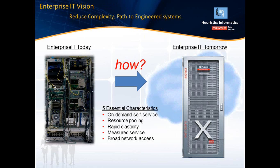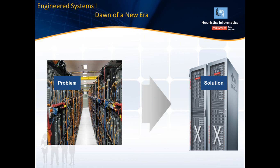How can we reduce complexity? If my application is on different components, managing each component within the data center leads to higher data center cost — the horizontal space in the data center grows and IT costs increase. This can be reduced by keeping all the components in a vertical fashion within the ExaLogic box, which doesn't occupy more than five square feet, thereby reducing IT data center cost and complexity.